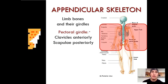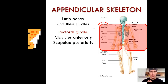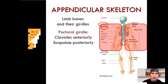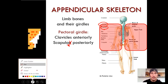The pectoral girdle is composed of two bones: anteriorly, the clavicles — the S-shaped bone easily palpated right here, we'll have lots of body fun time both here and in the lab — and posteriorly the scapula, or scapulae in the plural. A lot of words in anatomy that end in -ae are the plural forms of nouns that are singular ending in -a.